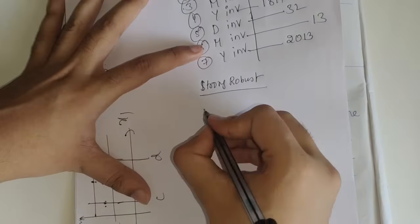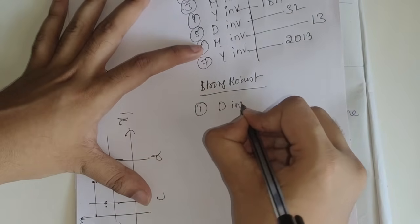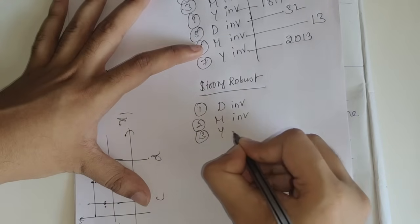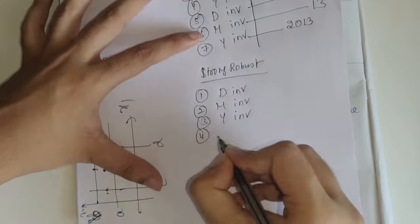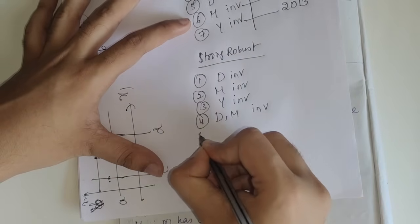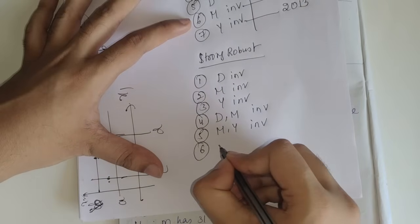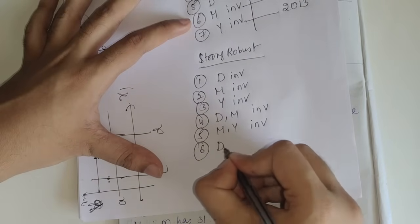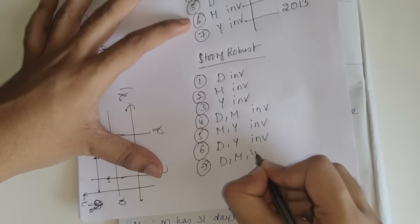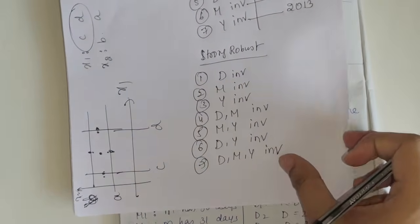For strong robust ECT on the next date problem, we take: date invalid only, month invalid only, year invalid only, then combinations — date and month invalid, month and year invalid, date and year invalid — and finally all three invalid. Description is more important than expected output for these cases.